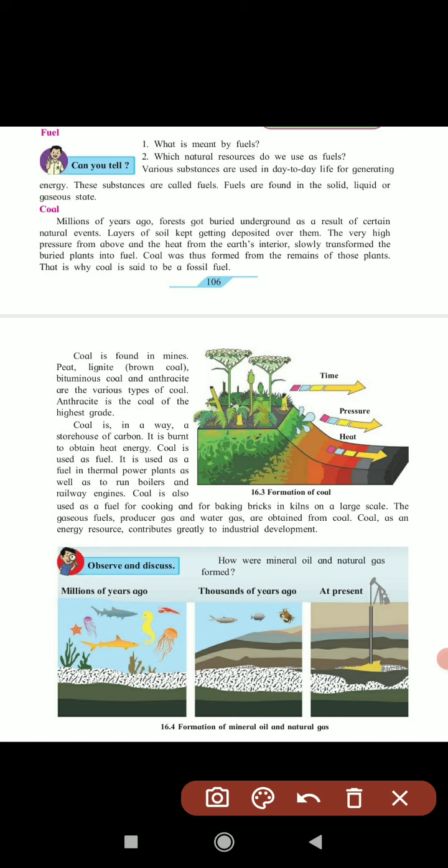Next, we'll discuss how mineral oil and natural gas are formed. Here three pictures show the formation of mineral oil and natural gas. Millions of years ago, there were many living animals in the oceans, but now their number is reduced.